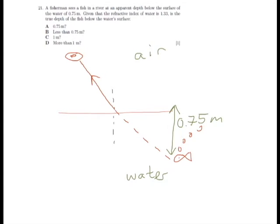There's an equation we can use here, which is that N, the refractive index, is equal to the real depth divided by the apparent depth. We can rearrange this, and the real depth is equal to N times the apparent depth.